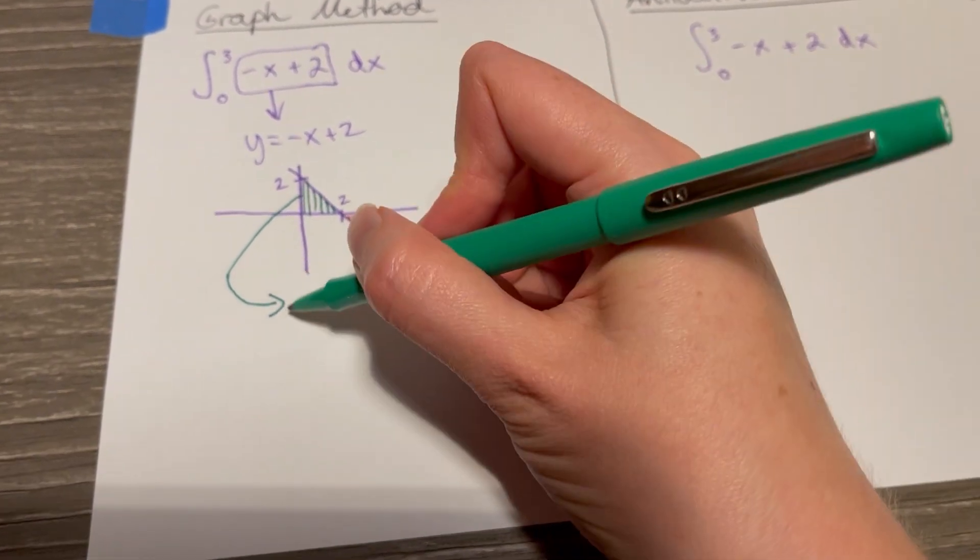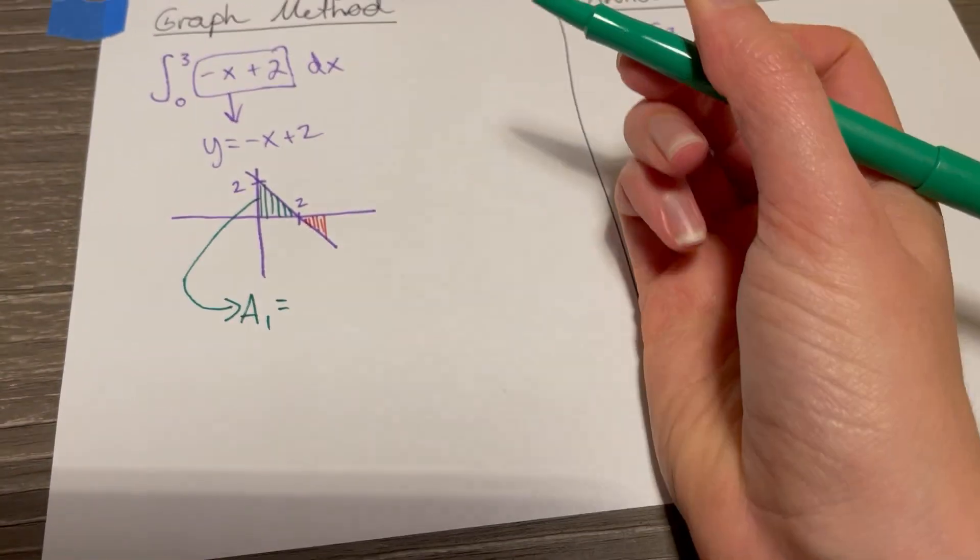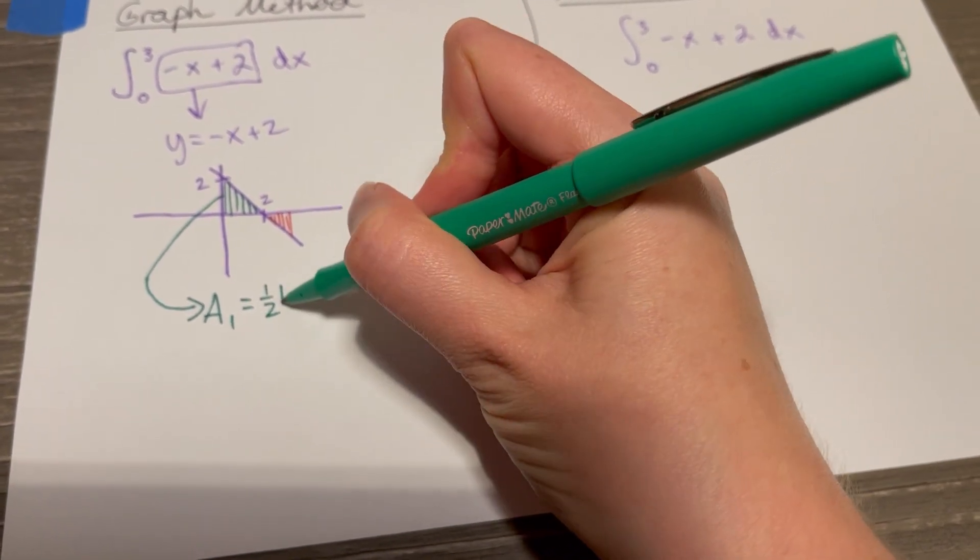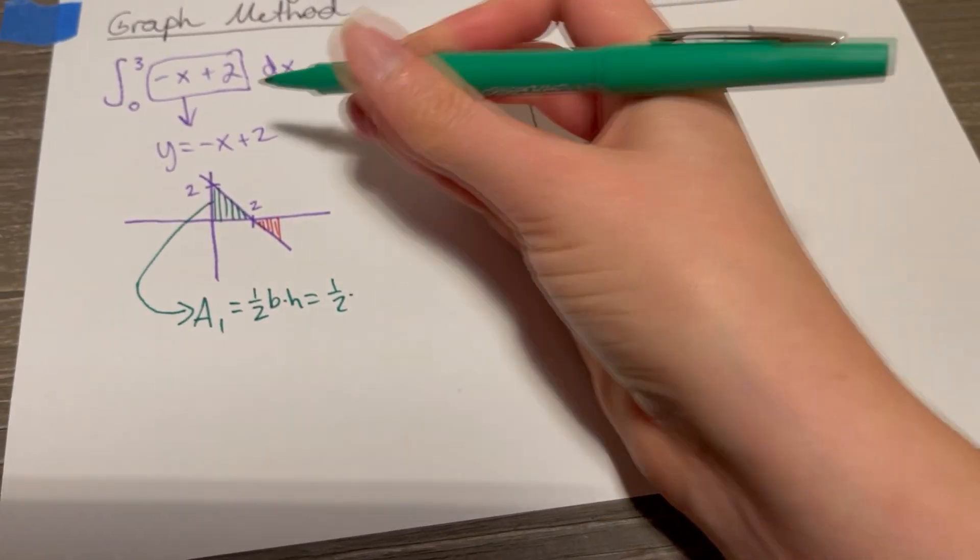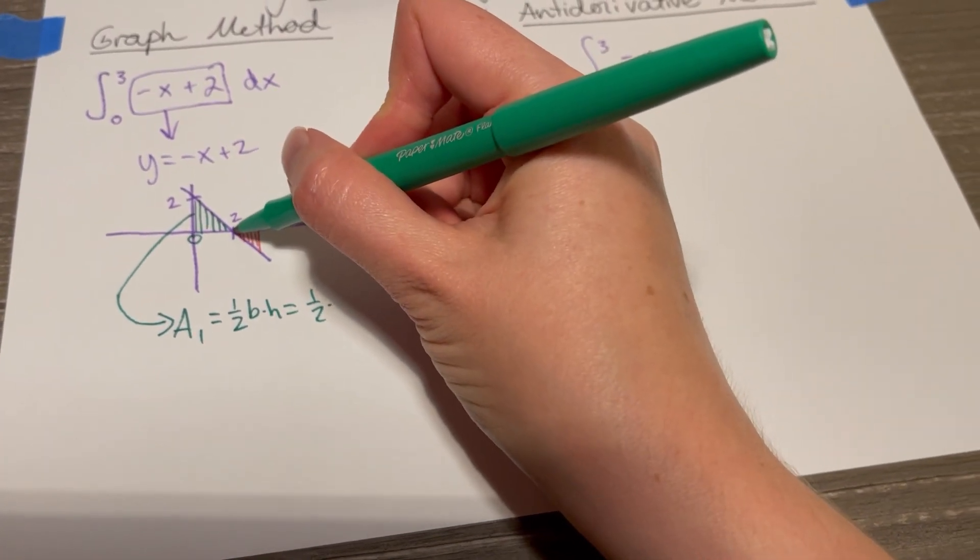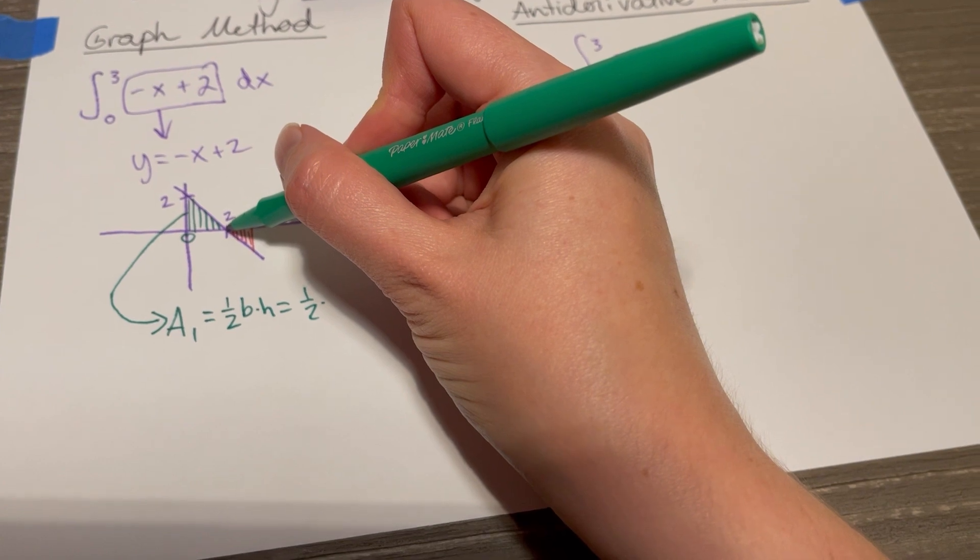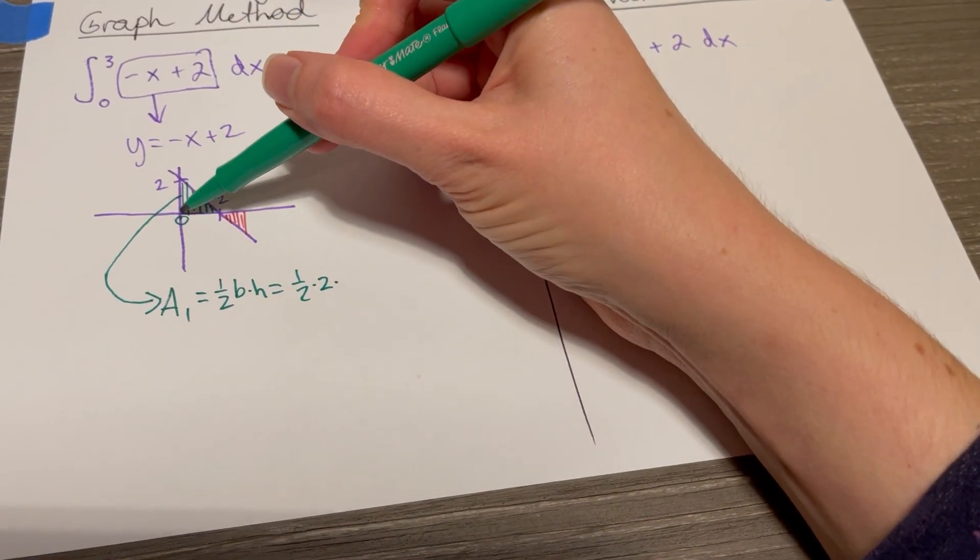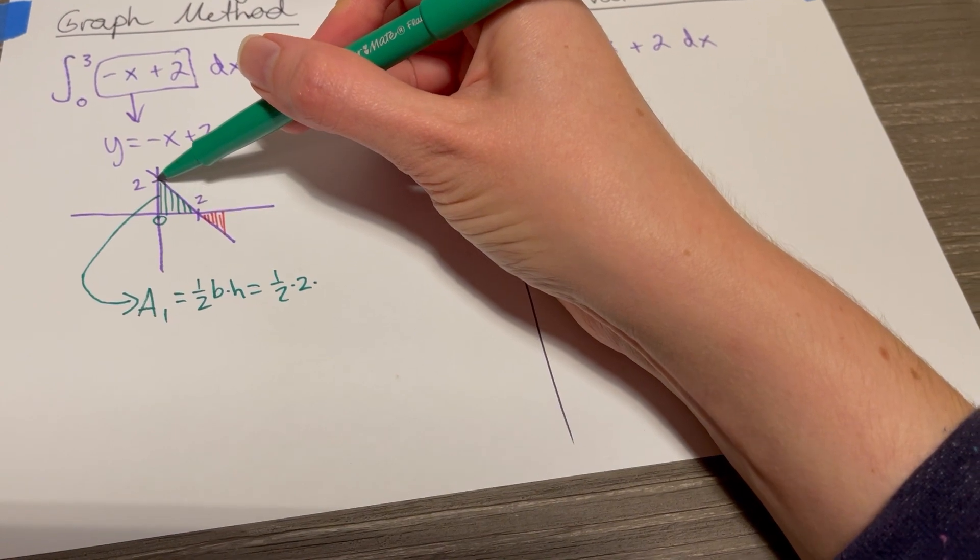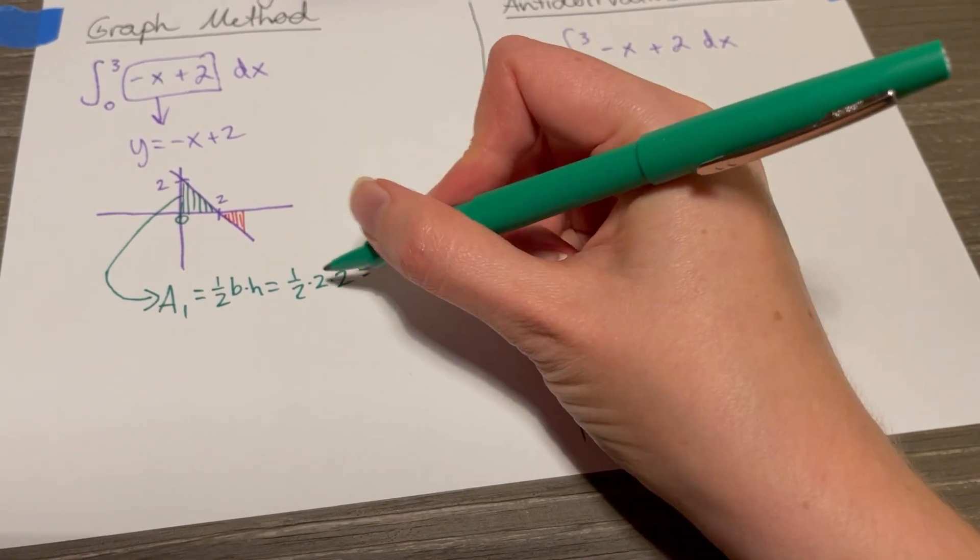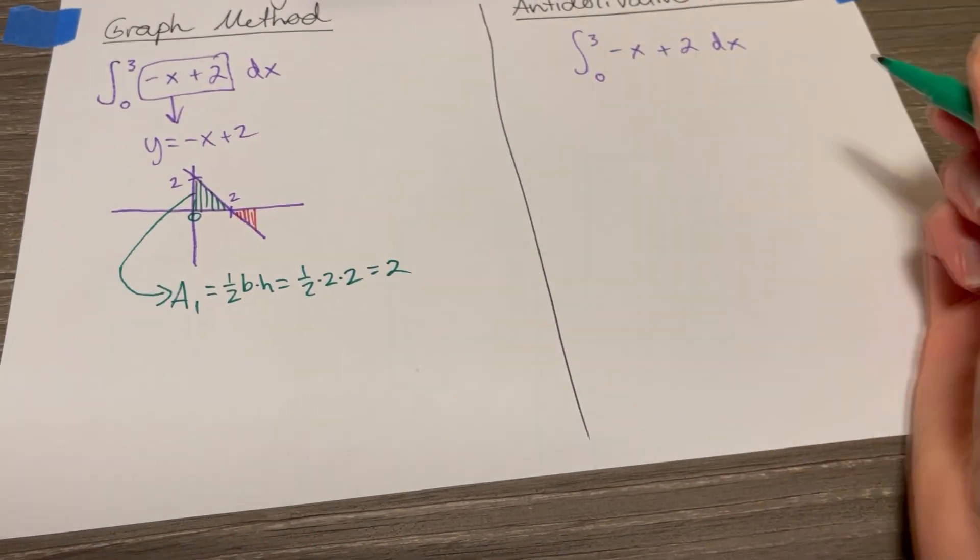Here we have a nice triangle, so this area is going to be a positive area. It's a triangle, so it'll be one half base times height, one half, the base goes from the origin, zero, to the x value two, which is the x-intercept, so that base distance is two, and the height is going to go all the way from zero to two, so it's also a height of two. One half times four is two.